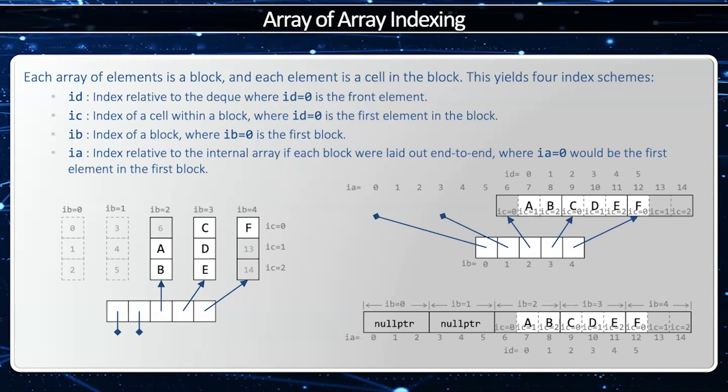And those are array indices that are not currently used, partially because block 0 and block 1 are not allocated. And then in array index 7, that corresponds to deque index 0, which is in block 2 and cell 1. And then array index 7, 8, 9, 10, 11,